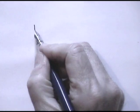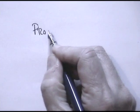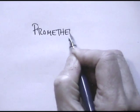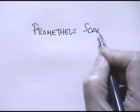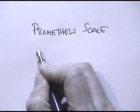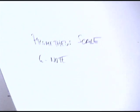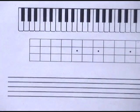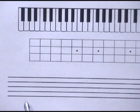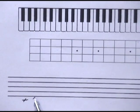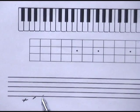The Prometheus scale is a six note scale. And one way to think of the Prometheus scale is that it's the same thing as a whole-tone scale, where the notes are separated by whole steps like C, D, E, then F sharp.